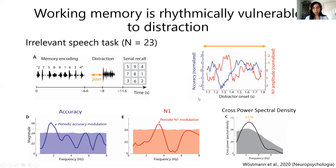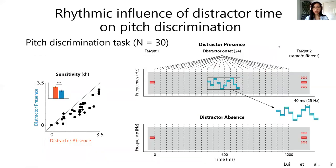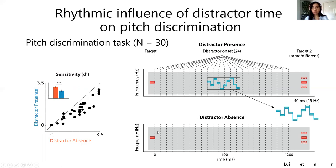We then did a follow-up experiment to see whether there is a rhythmic influence of distractor onset time on pitch discrimination. Participants needed to identify whether two consecutively presented targets were the same or different in pitch. In half of the trials there was a distractor — the distractor presence condition — occurring randomly at one of 24 distractor onset times. The distractor was a tone with a 25 Hz temporal structure, which is important later for extracting the distractor encoding-related neural measure. In the other half, there was no distractor — the distractor absence condition. As a sanity check, sensitivity was lower when the distractor was present, confirming that the distractor was indeed distracting.